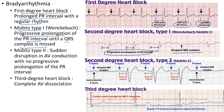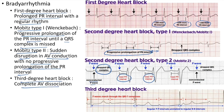Second-degree heart block type 2 (Mobitz type 2): there is sudden disruption in AV conduction with no progressive prolongation of the PR interval. There is a non-conducted P wave and a dropped QRS complex with a fixed PR interval. Third-degree heart block: there is complete AV dissociation — P waves march through QRS complexes, with regular PP intervals unrelated to regular RR intervals.